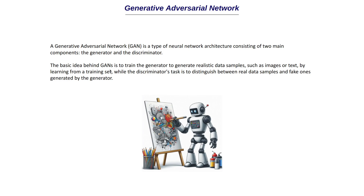The discriminator looks at both the images generated by the generator and the images from the training set. Whatever is coming from the training set should be classified as real, and the ones from the generator should be classified as fake. The generator should keep improving its performance such that the discriminator eventually shouldn't be able to say whether an image is real or fake. The discriminator is essentially a binary image classification model that classifies the image as one or zero — real or fake.